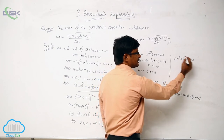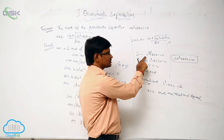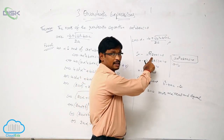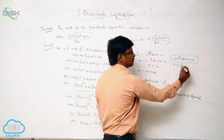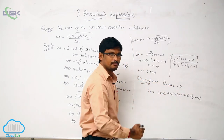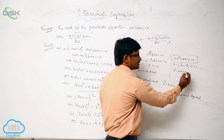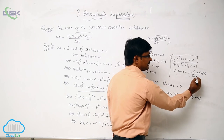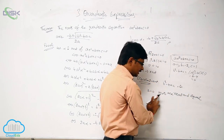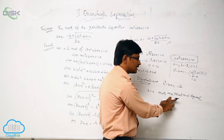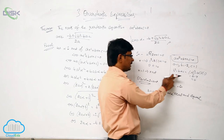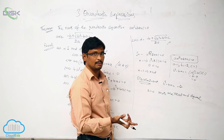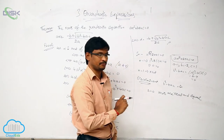Let us verify with our example. Compare x² − 2x + 1 = 0 with Ax² + Bx + C = 0. The coefficient of x² is 1, so a = 1. The coefficient of x is −2, so b = −2. And c = 1. Finding b² − 4ac: (−2)² − 4·1·1 = 4 − 4 = 0. Since delta = 0, the roots are real and equal — confirmed, since both roots were 1 and 1.